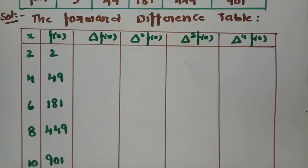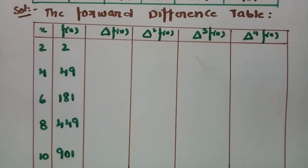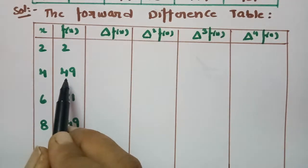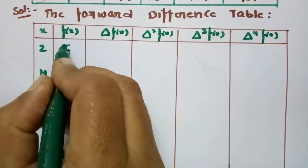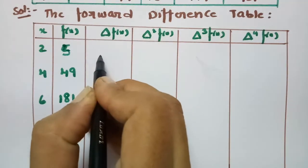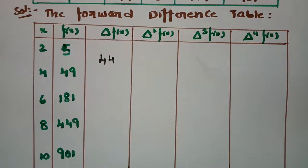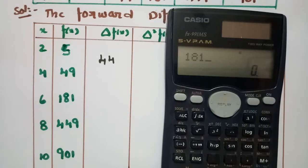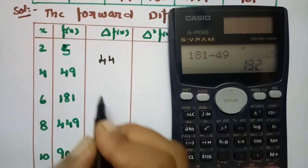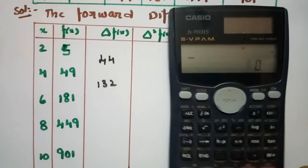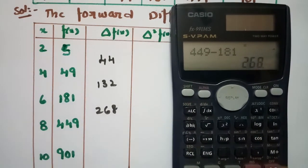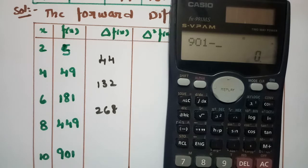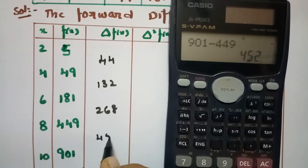First of all we have to frame the forward difference table. The first differences are: 49 minus 5 is 44, 181 minus 49 is 132, 449 minus 181 is 268, and 901 minus 449 is 452.